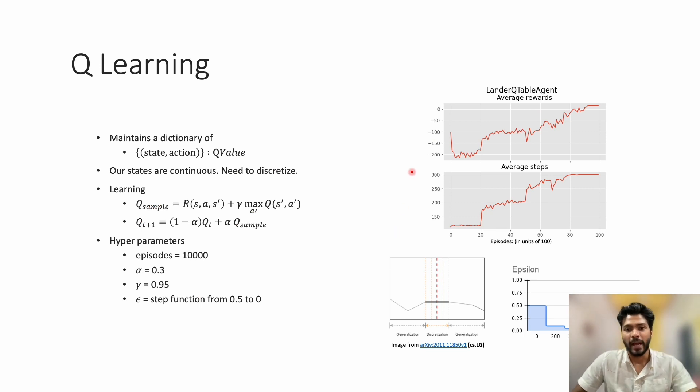Then I try the Q-learning algorithm. Q-learning maintains a dictionary where the state-action pairs are the keys and the Q-values are the values. Since our states are continuous, we need to discretize the states. The Q-values are updated after every step using the Bellman equation.